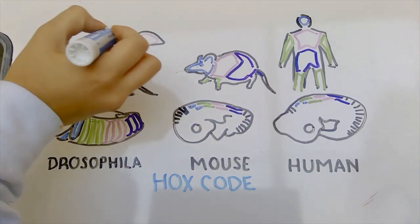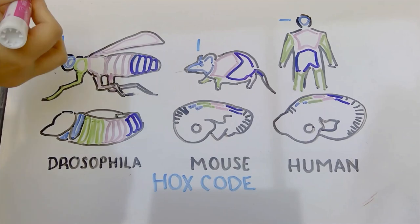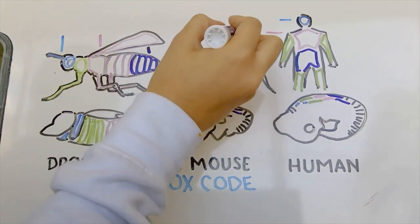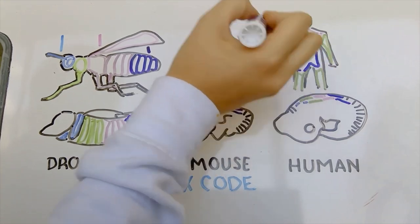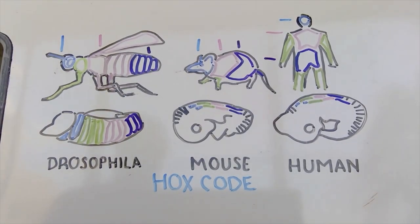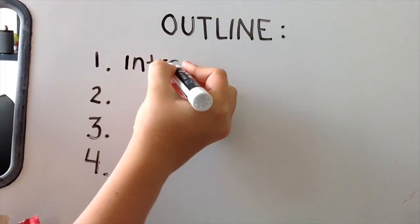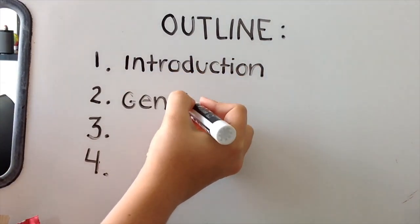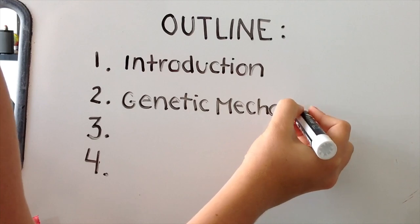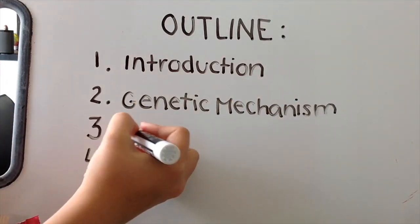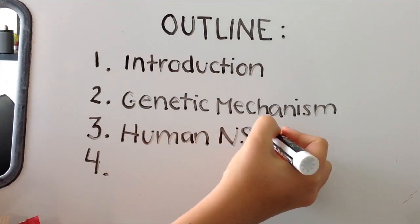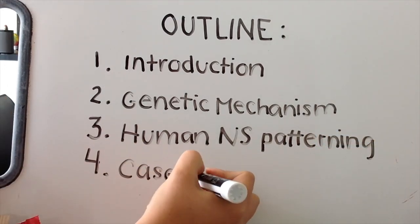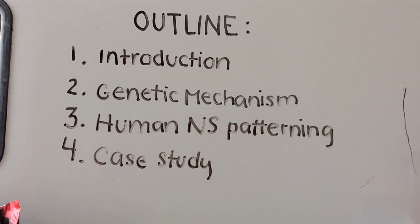Each of the Hox genes specify segment identity — whether a segment of the embryo should form part of the head, thorax, or abdomen — and they're all clustered together in the same order as they appear in the body plan within the chromosomes. In this video, we're going to first introduce you to the Hox code and how it operates in Drosophila; second, explain the genetic mechanism behind it; third, how it patterns the nervous system in developing humans; and finally, fourth, we'll delve into one study that proves the Hox code in action.